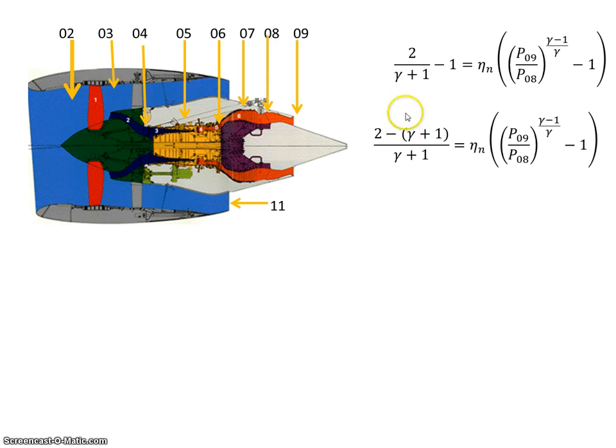So 2 minus 1 is the same as saying minus gamma plus 1 all over gamma plus 1, so 1 is really gamma plus 1 over gamma plus 1, so it's like saying minus gamma plus 1. That's all I've done there.